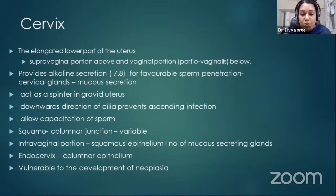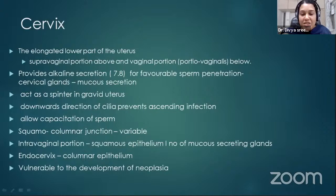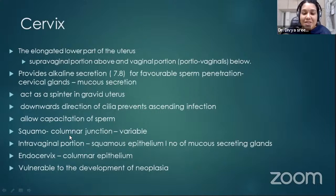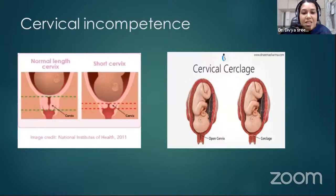If the cervical secretion gets infected, it causes cervicitis. The inner cervix is lined by columnar epithelium and the outer cervix by squamous epithelium. The squamocolumnar junction between the outer and inner cervix is clinically significant because there is a higher chance of developing cervical intraepithelial neoplasia (CIN) in this area.